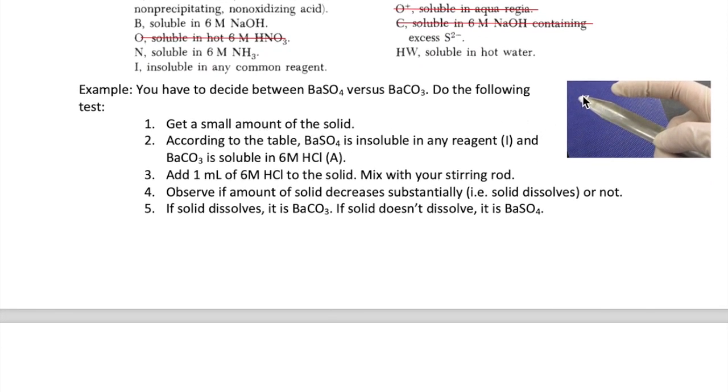Take a small amount of the solid, shown here in this picture, and then add one milliliter of 6 molar HCl. If the solid dissolves, that means we have barium carbonate. If the solid stays undissolved, then it is barium sulfate, based on what we learned from the table.